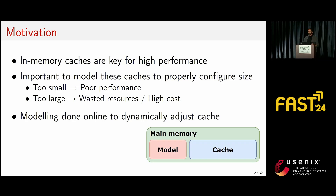In-memory caches, such as Redis, Memcached, or many other application-level in-memory caches, are ubiquitous with high-performance computing. Any application that has more than a handful of users is going to use one of these to not only serve data faster with lower latency, but also reduce the load on the back-end data stores. Unfortunately, these caches use expensive memory resources, and thus it's important to model the caches to properly understand their configuration sizes.